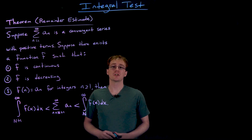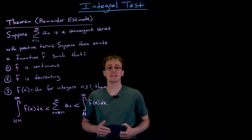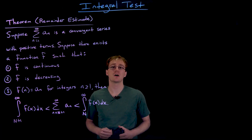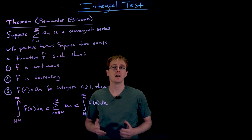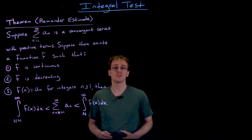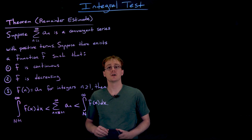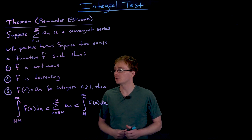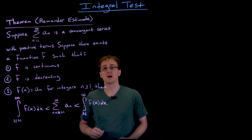Welcome back everyone. A lot of our discussion so far in this section has just been using things like the integral test to determine whether a series converges or diverges, but we haven't talked about finding what the series converges to or approximating what the series converges to. This next theorem, called the remainder estimate theorem for the integral test, is going to help us create a lower bound and upper bound for the remainder of our series.